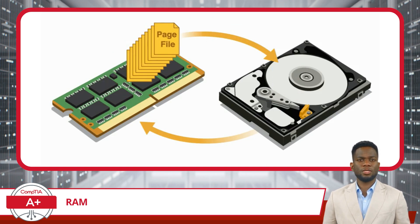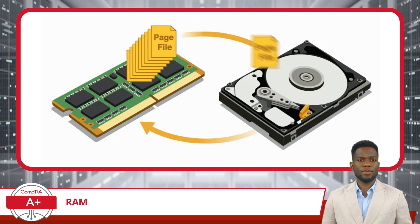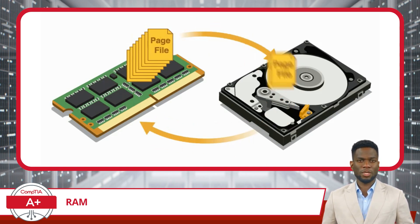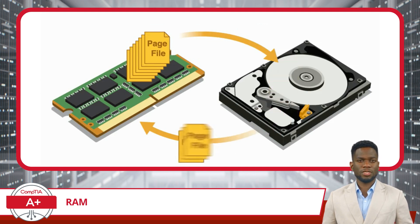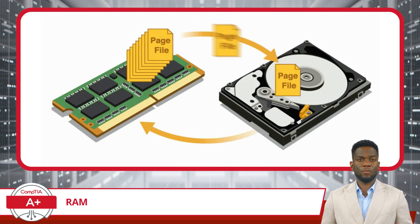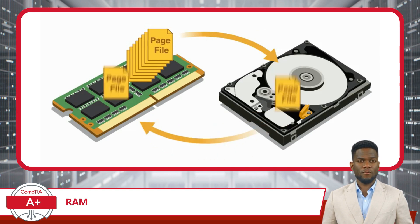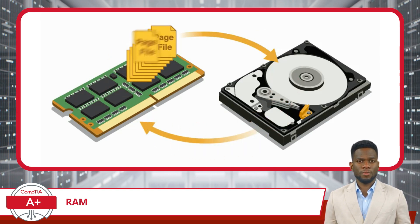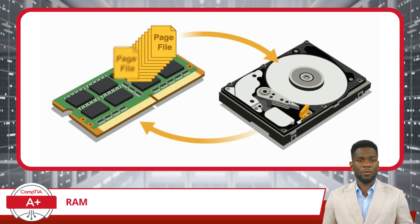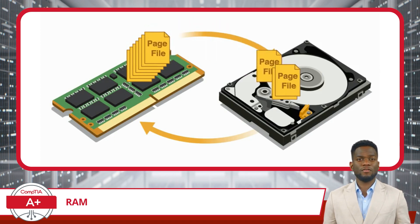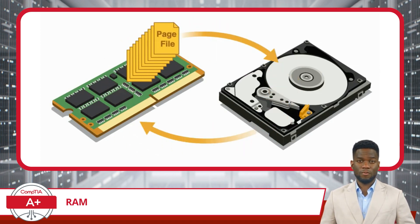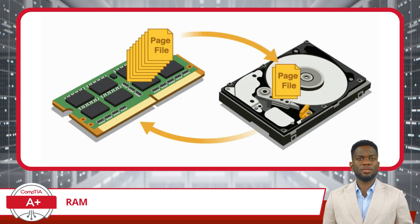Next, we have page swapping. As the user switches between different programs, the operating system uses a technique called page swapping. It moves pages in and out of the physical RAM and the page file as needed. When a program that has pages stored in the page file becomes active again, its pages are moved back to the RAM for faster access.